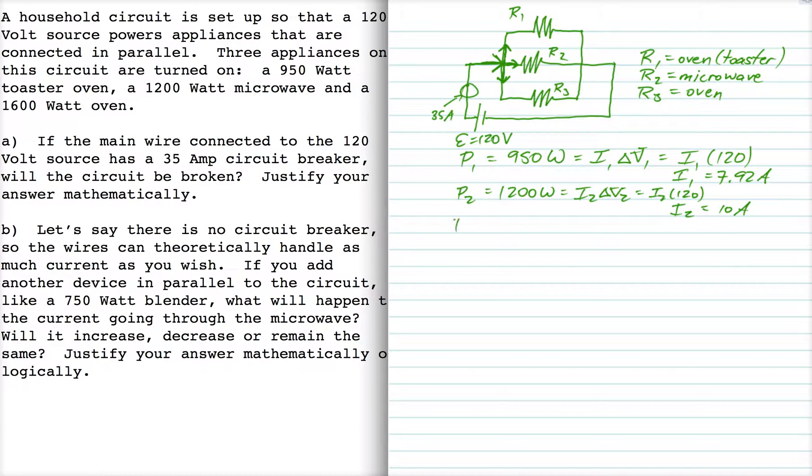And then the power of device number 3 is 1600 watts, which gives you I3 of 13.3 amps.